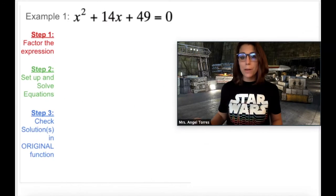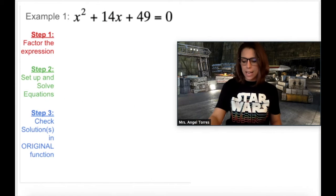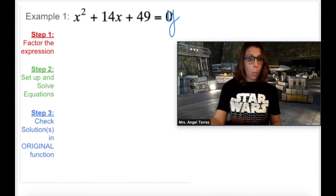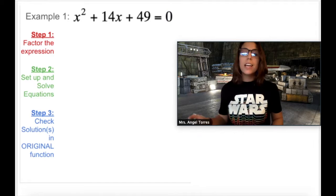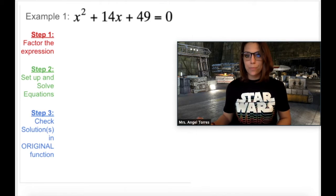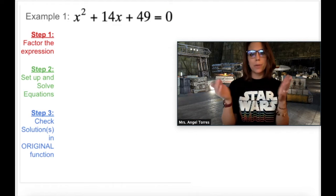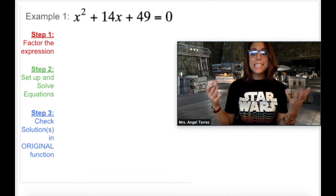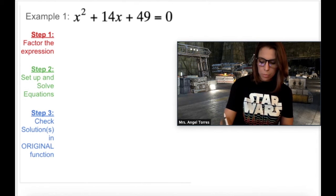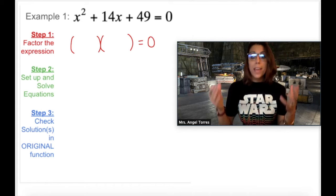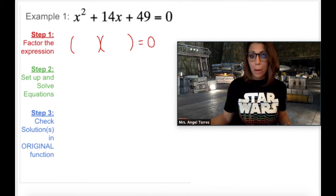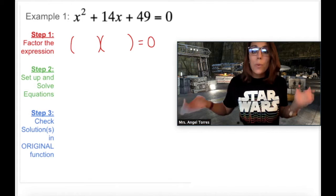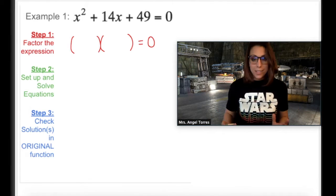So here we have a quadratic in standard form. And again, rather than being set equal to Y, as it would be if you were graphing, it's already set equal to zero. So at this point, it's not as simple as just looking and seeing what values of X have to be to make this zero. So we need to get this into a product of two binomials, get it into intercept form, and from there, we can apply our zero product property. Well, how do we do that? We do that by factoring.